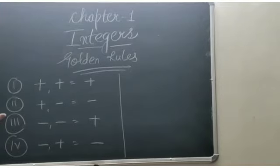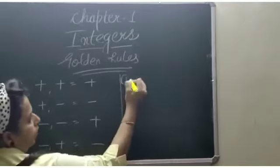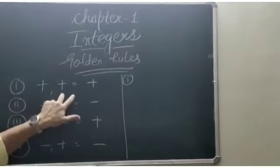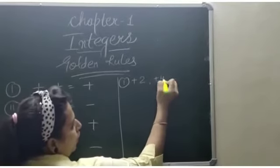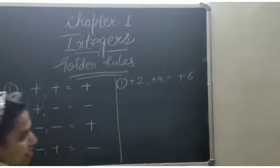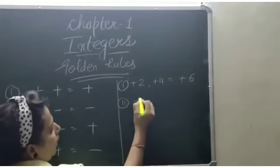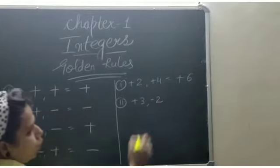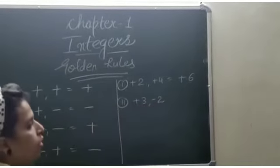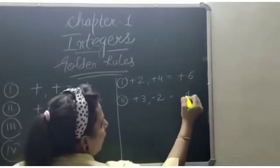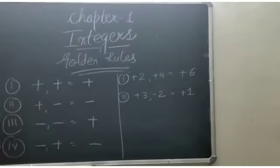Let's explain these with the help of examples. First one — both are addition: if I take plus 2 plus 4, it will be plus 6. Second one: plus 3 minus 2 — 3 is positive and 2 is negative, so you will get 1, and the sign will be of the greater number, so it will be plus 1.